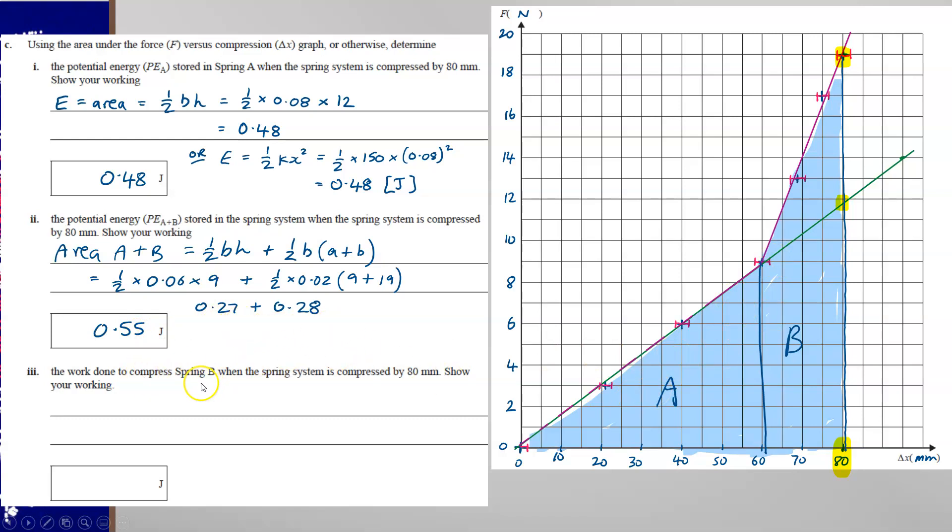Now the work done to compress spring B when the system is compressed by 80 millimetres is the difference between these two. So the potential energy of A plus B take away the potential energy of A gives you 0.07 joules to compress spring B.